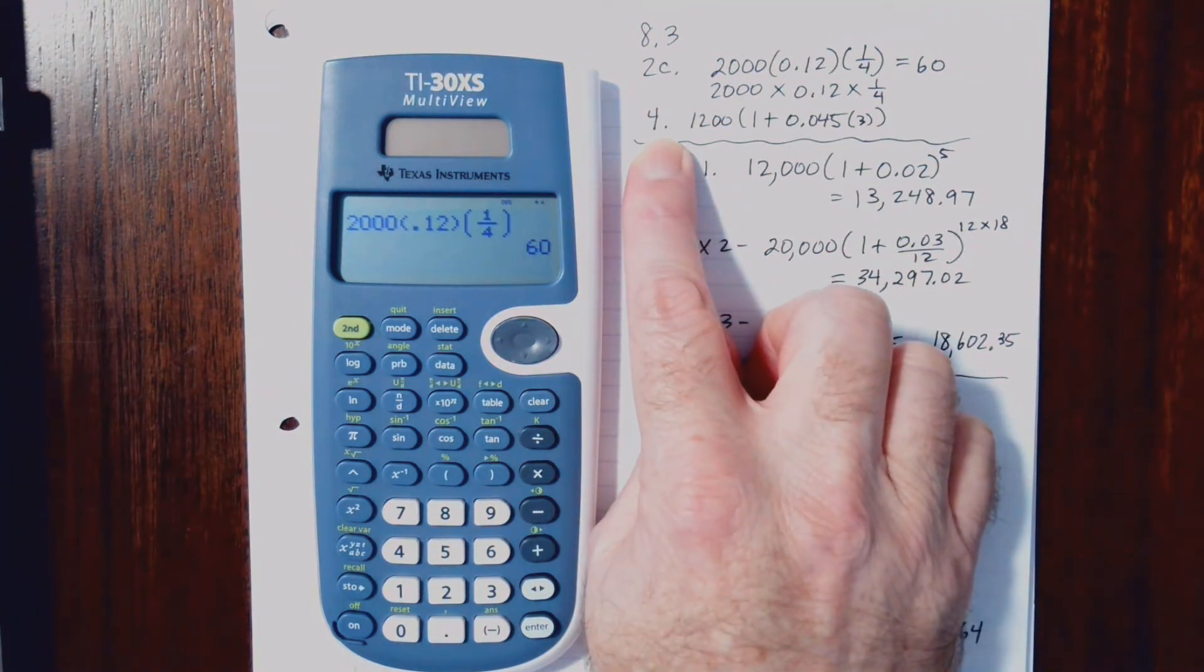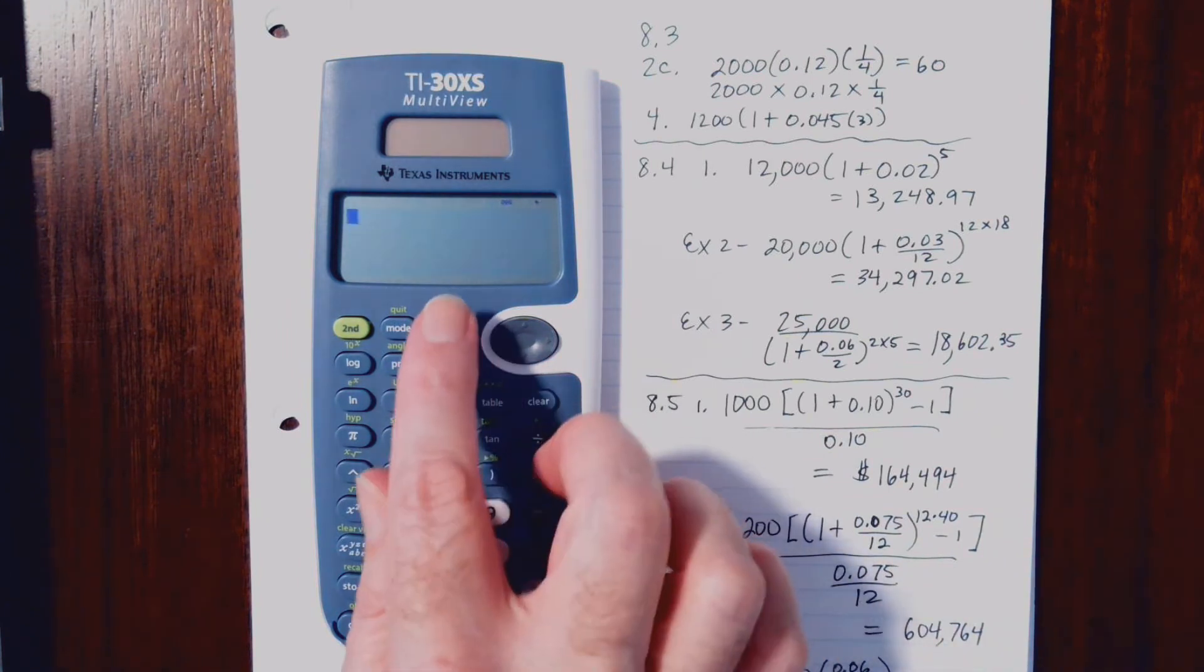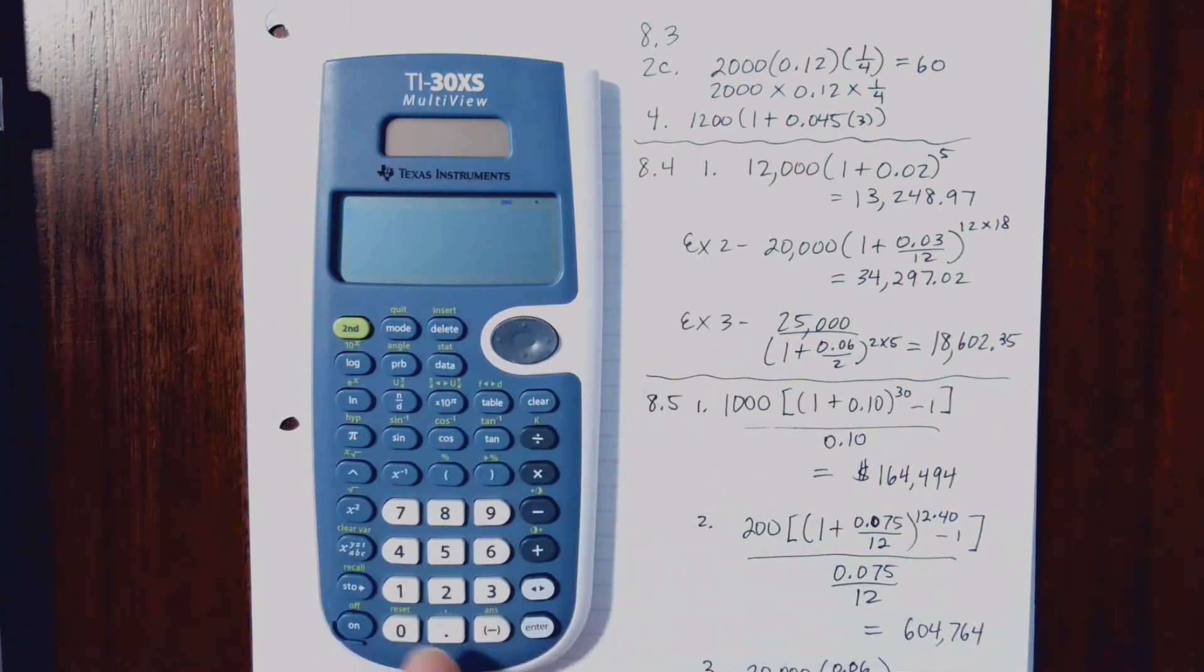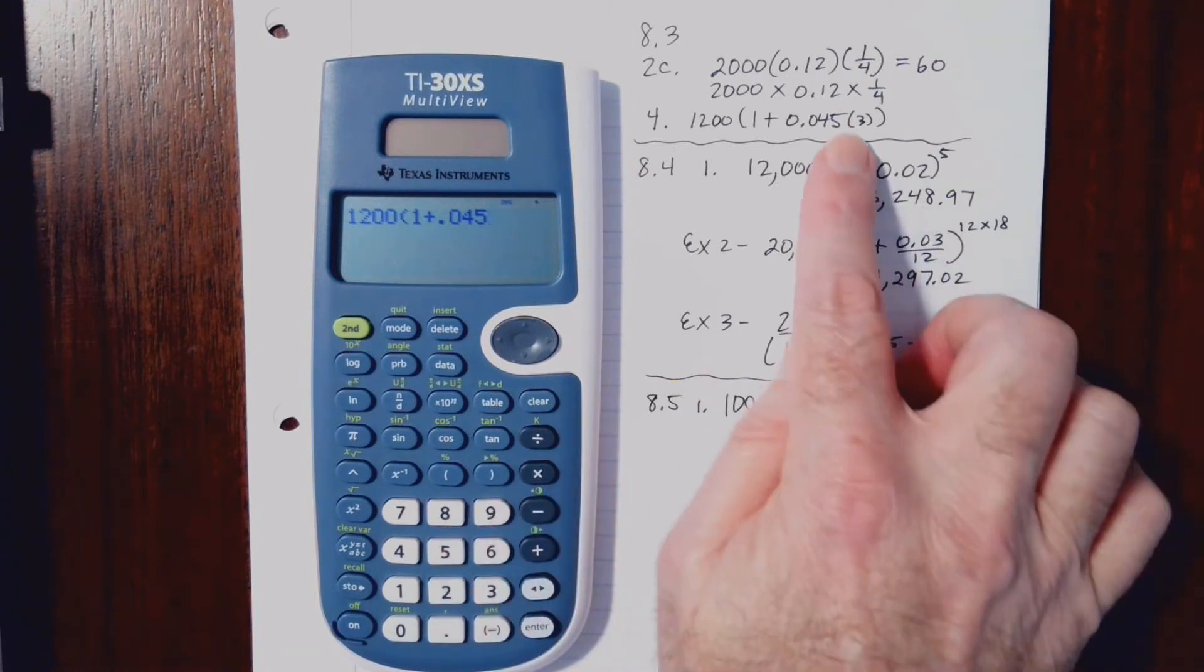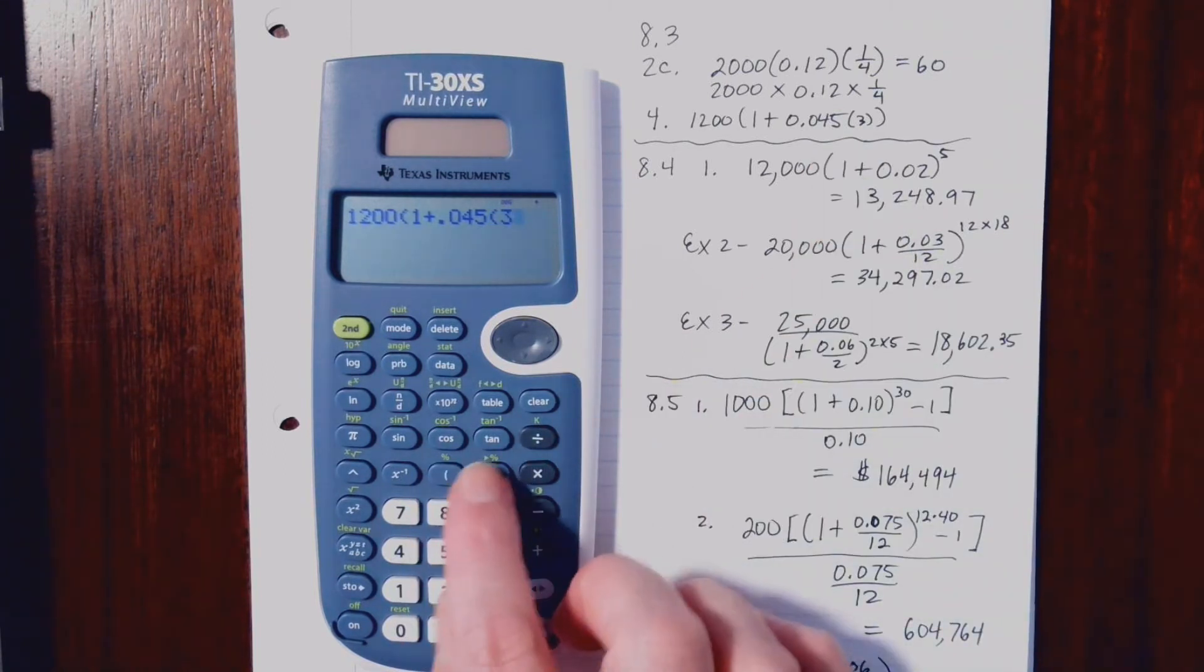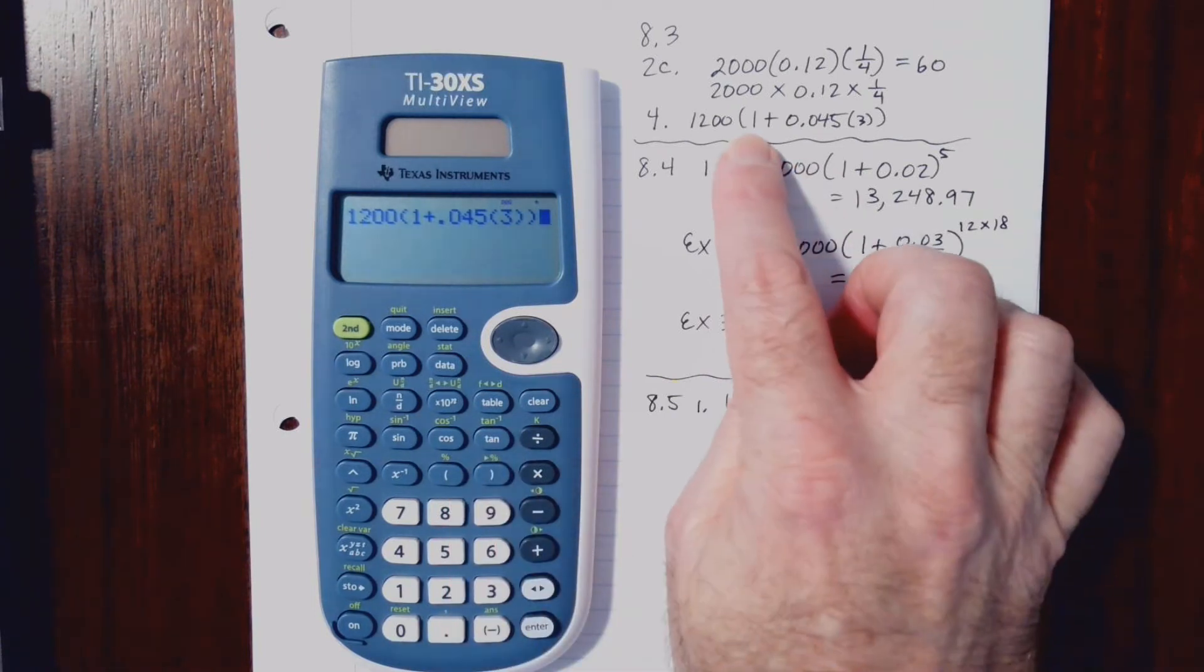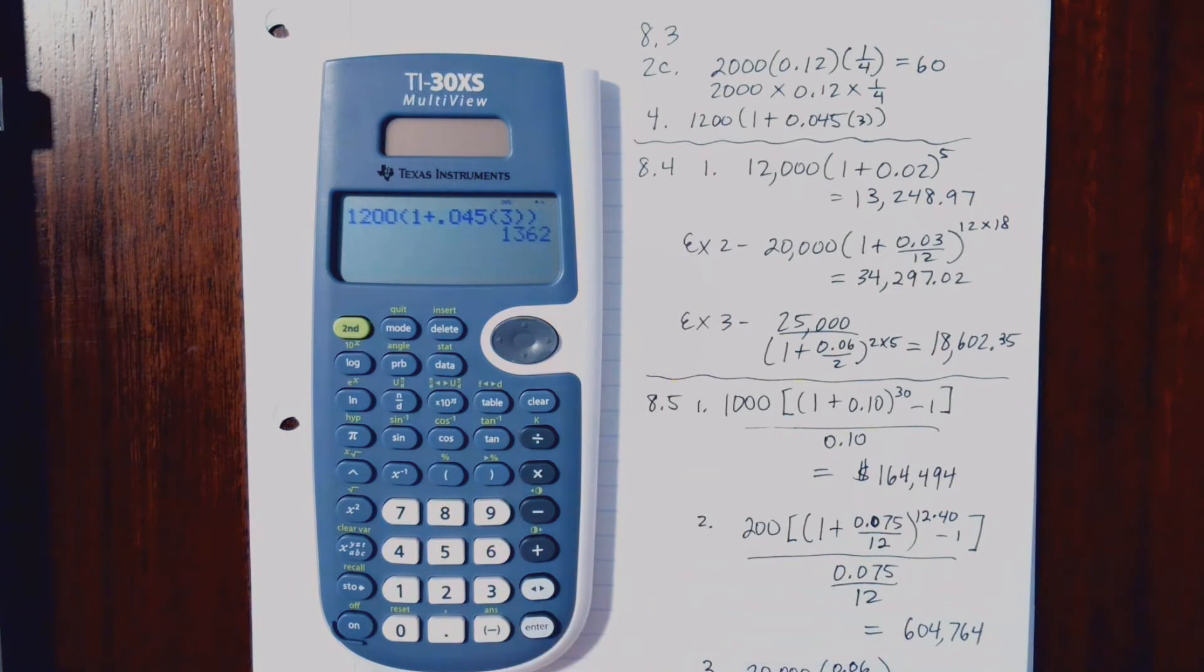All right, let's go ahead and do number 4 now in Section 8.3. Now, I like to clear my screen each time. So let's see, we have 1,200, parentheses, 1, plus .045. Now, I can hit the times button. Since it's in parentheses here, I'm going to go ahead and use parentheses. Notice I need two parentheses there to close out this part here. And so now, let's go ahead and hit Enter.